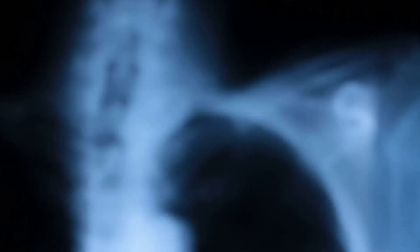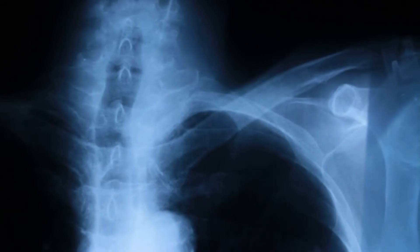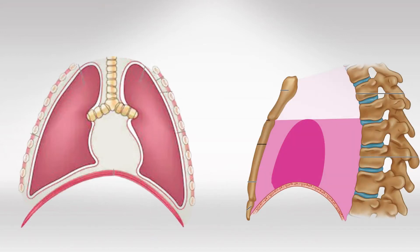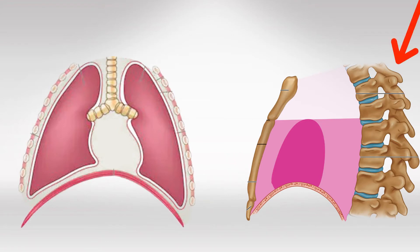Welcome back. In this video, we'll talk about the anatomy of the mediastinum. It is the area in the middle of the chest, surrounded on each side by the lungs. In front of it, we have the chest, and in the back, there is the spine. This area is very crucial because it houses the heart and the major vessels.